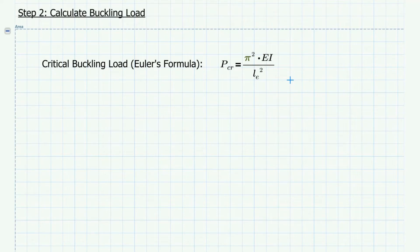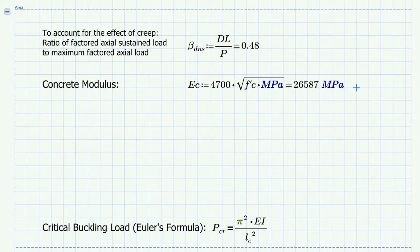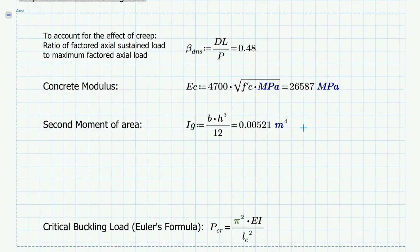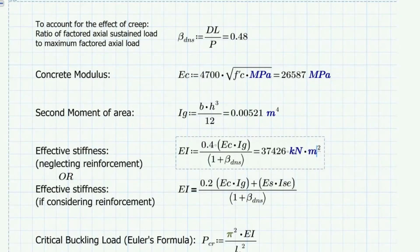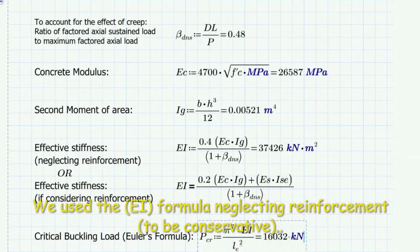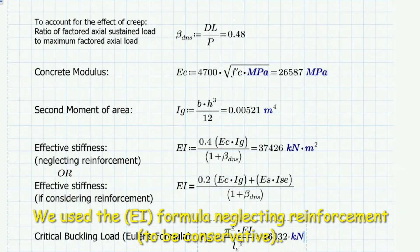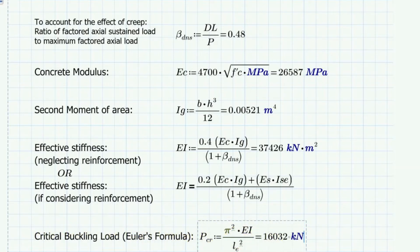Next is to calculate the critical buckling load. The critical buckling load is calculated based on Euler's formula, which equals pi squared times the stiffness divided by the square of the effective length. The effective stiffness EI is given by this formula, where IG is the second moment of area and EC is the concrete modulus. Beta-ds is the ratio of the factored sustained load to the factored total load. Using all the formulas above, we get the critical buckling load.